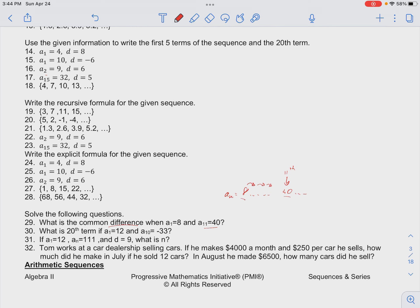So we can say that our common difference is the same as our change between these two a sub n terms. So that would be 40 minus 8 divided by how many places there are in between these two numbers.